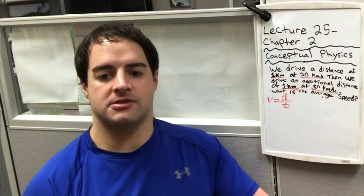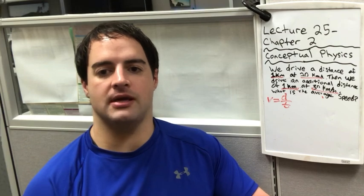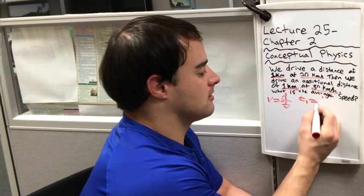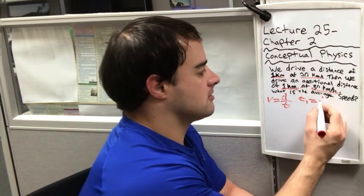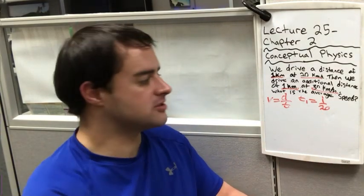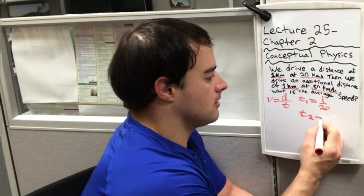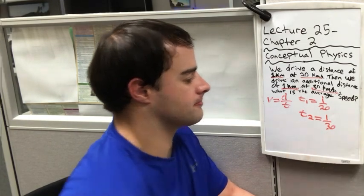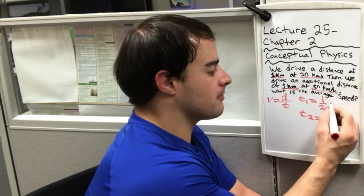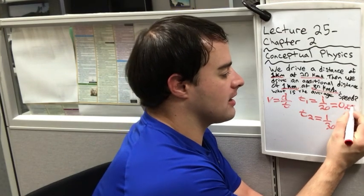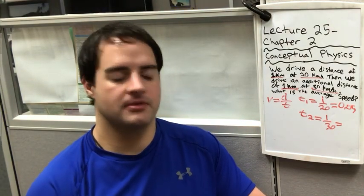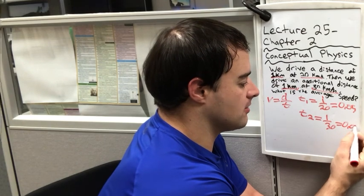You're going to use two equations of time. T1 equals 1 over 20. And T2 equals 1 over 30. 1 over 20 in decimal form is 0.05. And 1 over 30 in decimal form is 0.03.